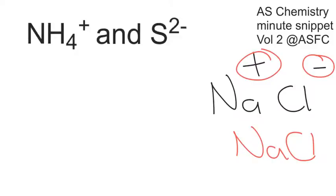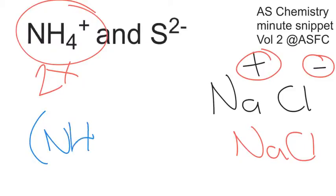Now here what I'm going to need to use is 2 lots of the NH4 plus because I need 2 pluses to cancel out the 2 minus from the 1 S2 minus. So the formula here is actually going to read NH4 2 S.